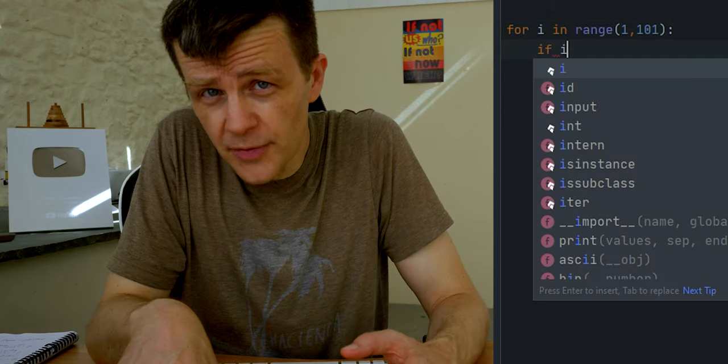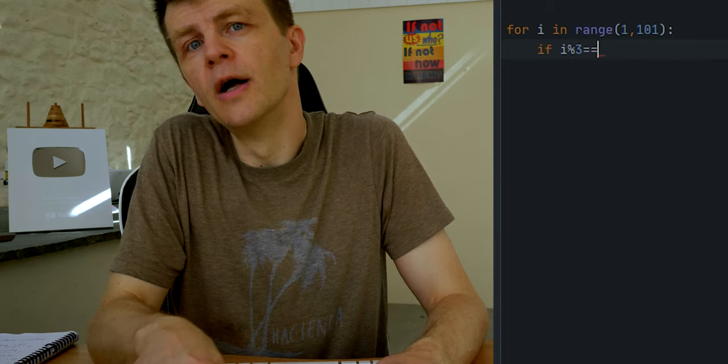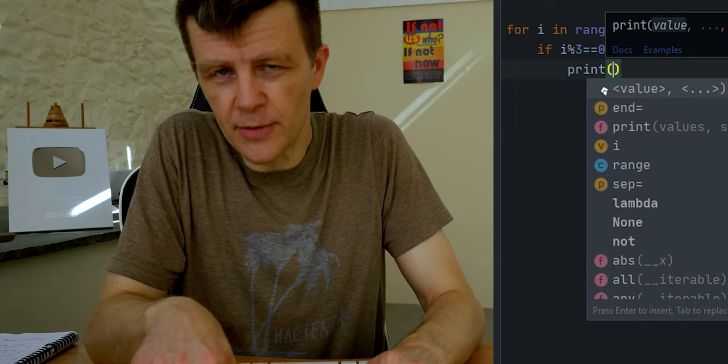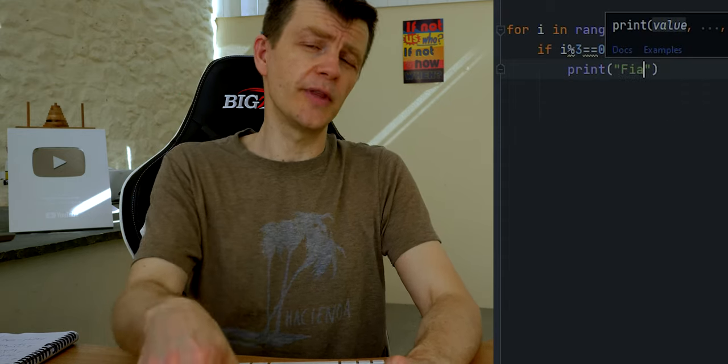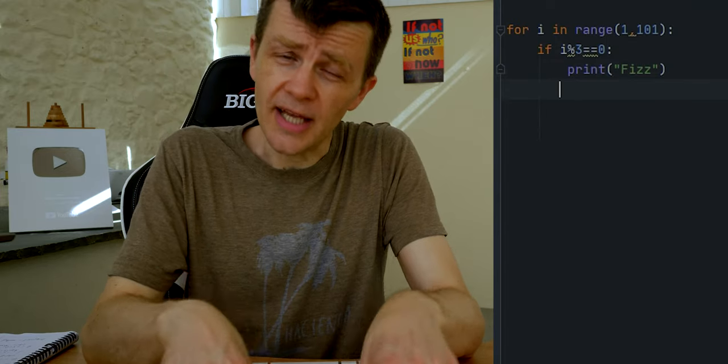Now the range parameters, the first number is where we want to start the iterator, and then we go up to one before the second parameter. So if we want to go from one to a hundred, we have 1 to 101 in the range function. Then we put the colon, the all-important Python colon.